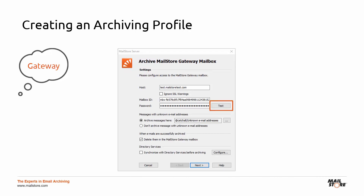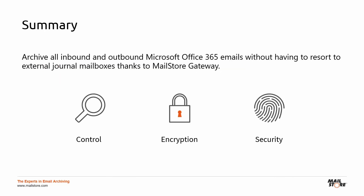Having been archived successfully, emails should be removed automatically from the MailStore Gateway mailbox in order to preserve storage space in this journal mailbox. Thanks to MailStore Gateway, you can now automatically archive all your inbound and outbound Microsoft Office 365 emails without having to resort to external journal mailboxes, meaning that you retain full control over your business emails.